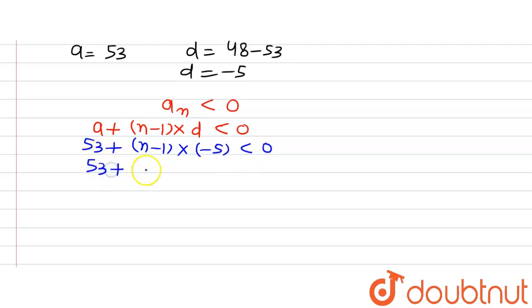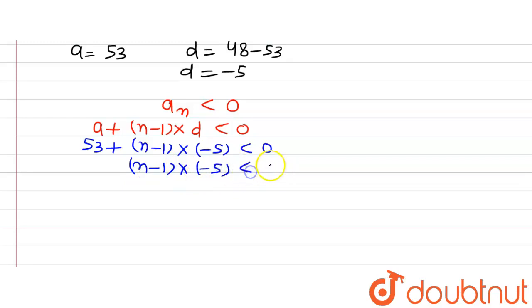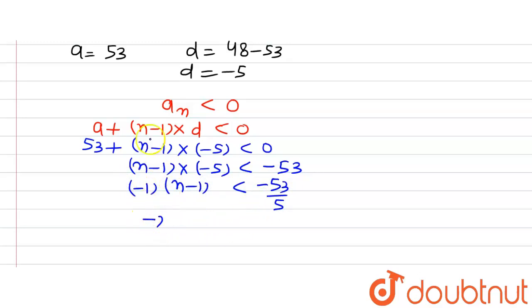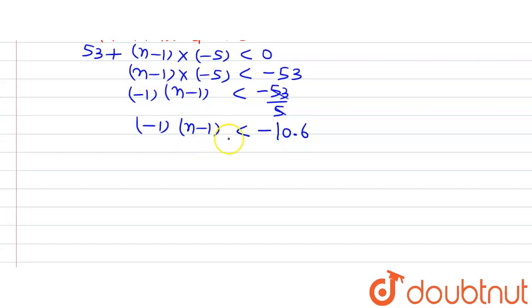So we have 53 plus (N minus 1) multiplied by minus 5. Moving 53 to the other side of the inequality gives (N minus 1) multiplied by minus 5 less than minus 53. Dividing both sides by minus 5 gives (N minus 1) less than minus 53 divided by 5. Since 53 divided by 5 equals 10.6, we have N minus 1 less than minus 10.6.